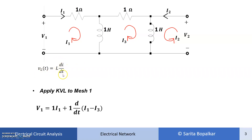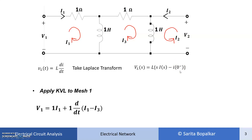The voltage across an inductor is L di/dt, and the Laplace transform of differentiation gives L·S·I(S) − L·I(0−). For two-port network analysis we assume zero initial conditions, so I(0−) = 0, and the voltage across the inductor in the S domain becomes L·S·I(S). Whenever we take the transform, the inductor is represented as LS.